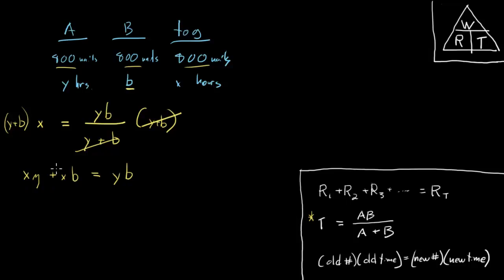What now? Well, I'm looking for B so I want to get all my terms that include B on the same side and everything else on the other. I've got a B here and a B here. I'm going to bring this B over to this side by subtracting XB from both sides. That leaves me with XY equals YB minus XB.